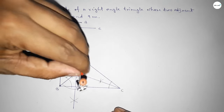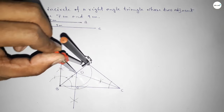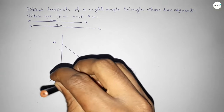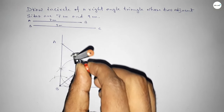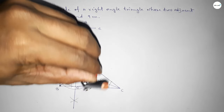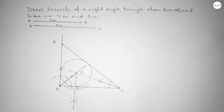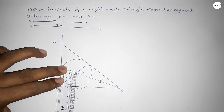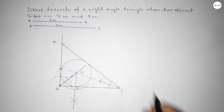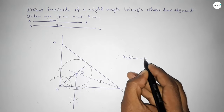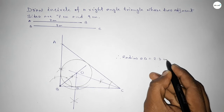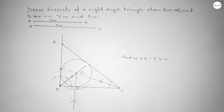Drawing an arc with radius OD, which represents the incircle of the right angle triangle whose two sides are seven centimeters and nine centimeters. Therefore, radius OD equals 2.3 centimeters. That's all — thanks for watching. If this video is helpful to you, please share it with your friends.